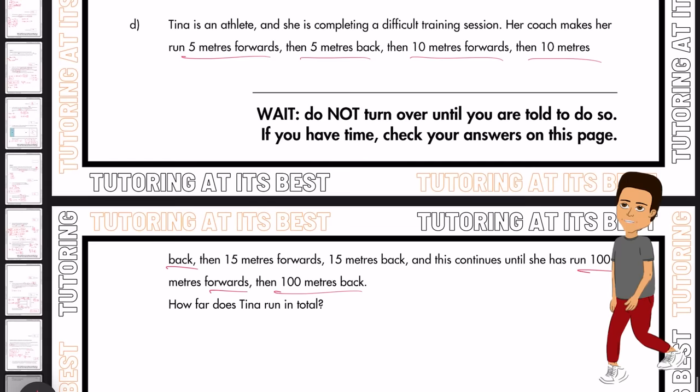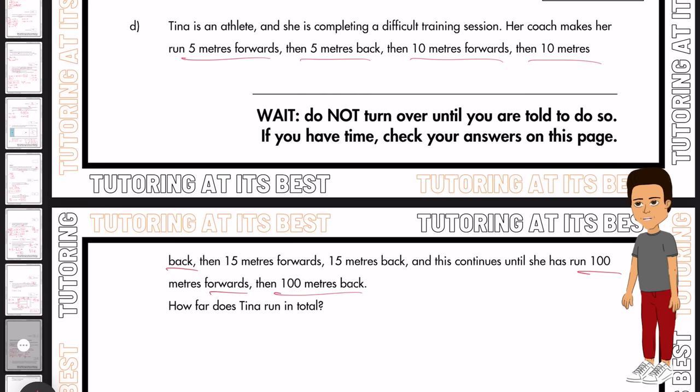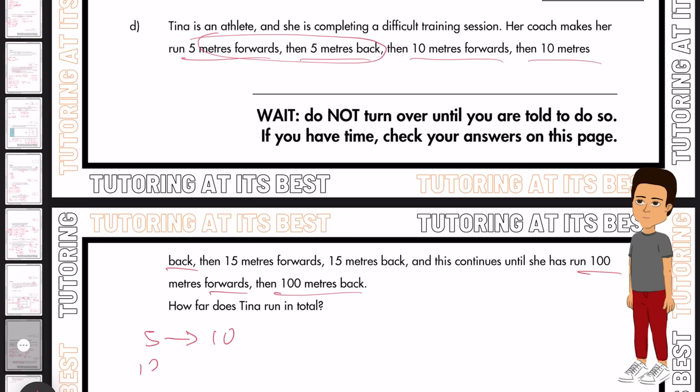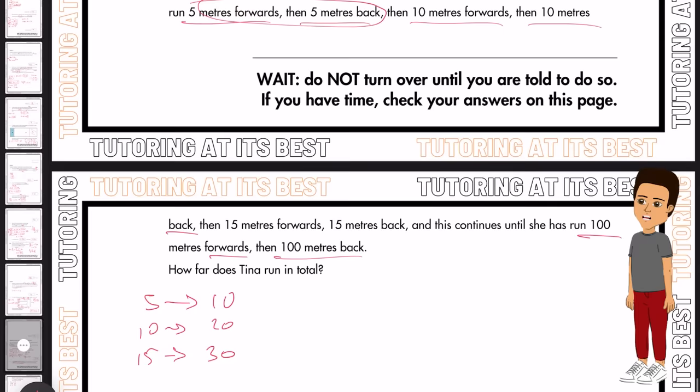Well, let's take a look. So in total, we know that we just need to double our amount every time, right? So when she's running 5 meters forward and 5 meters back, we just double our number. So 5 would become 10, then 10 would become 20, then 15 would become 30, and so on. But what's the shortcut here? How far does Tina run in total?